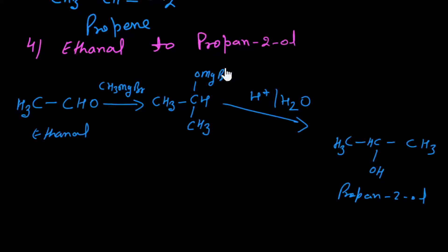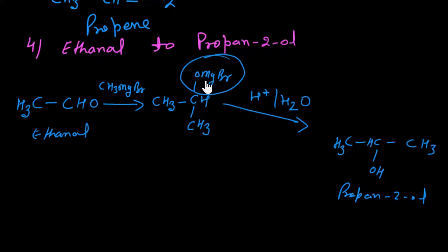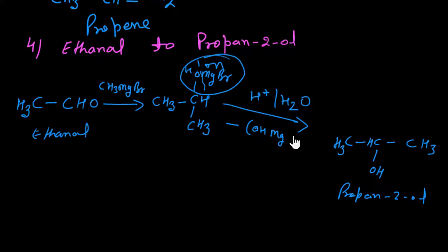After the Grignard reaction, we perform acid hydrolysis with dilute H₂SO₄ (or dilute HCl). This gives us the alcohol product along with hydroxymagnesiumbromide as byproduct. This completes the conversion.